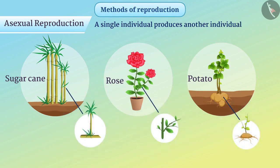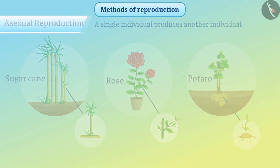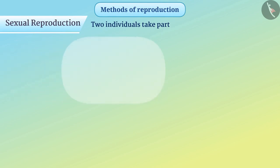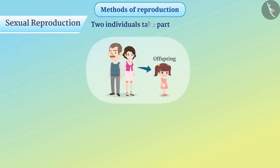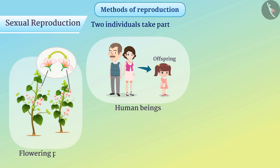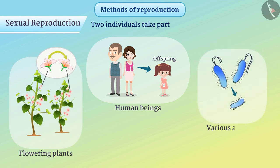In contrast, the reproduction in which two individuals take part is called sexual reproduction. For example, human beings, flowering plants, and various animals produce new organisms by sexual reproduction.